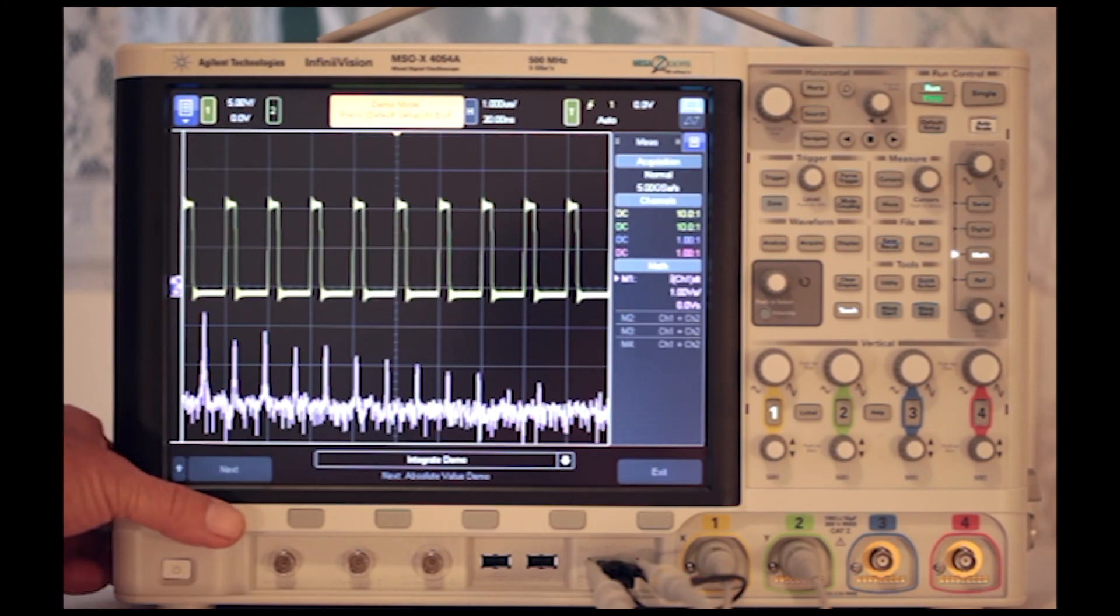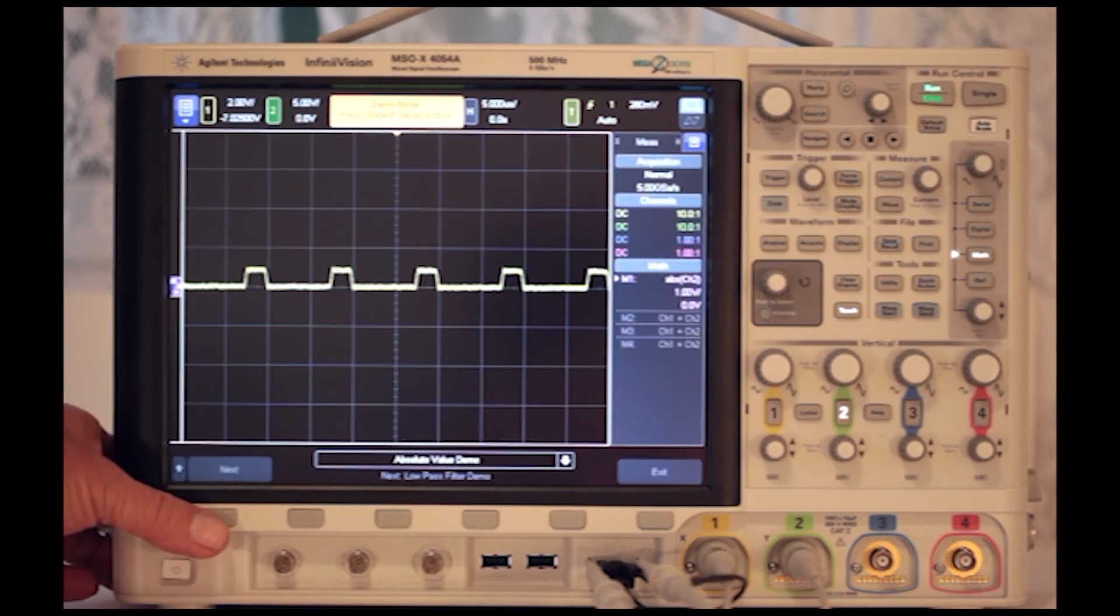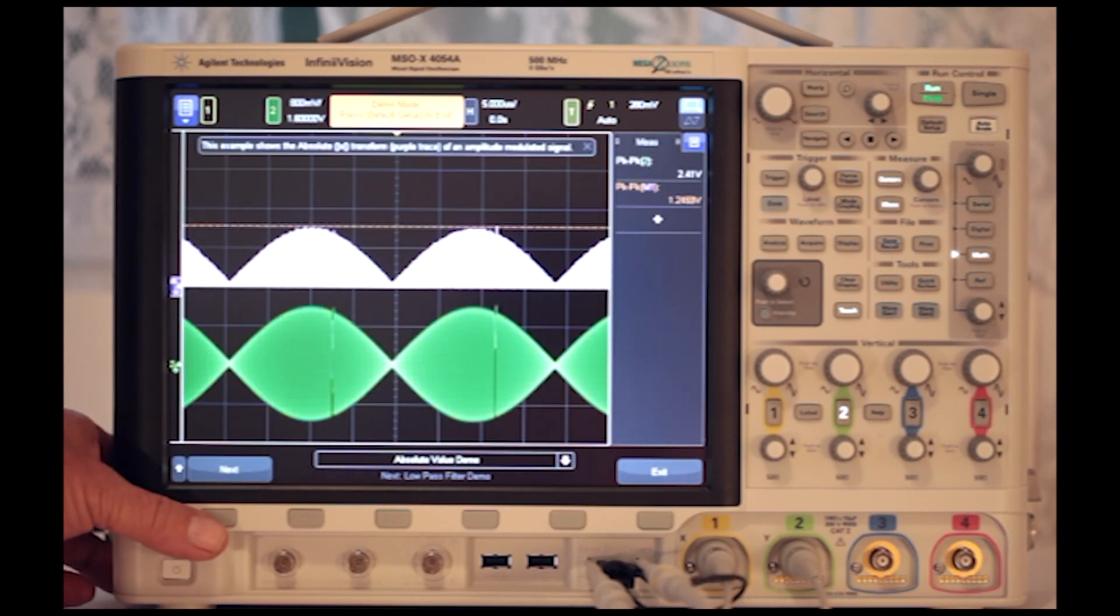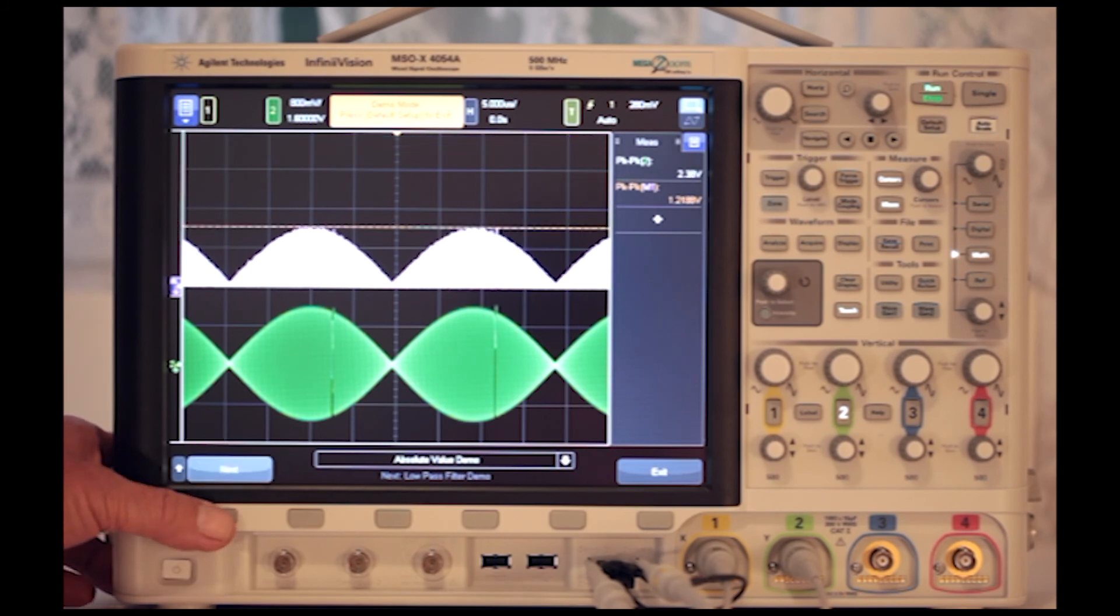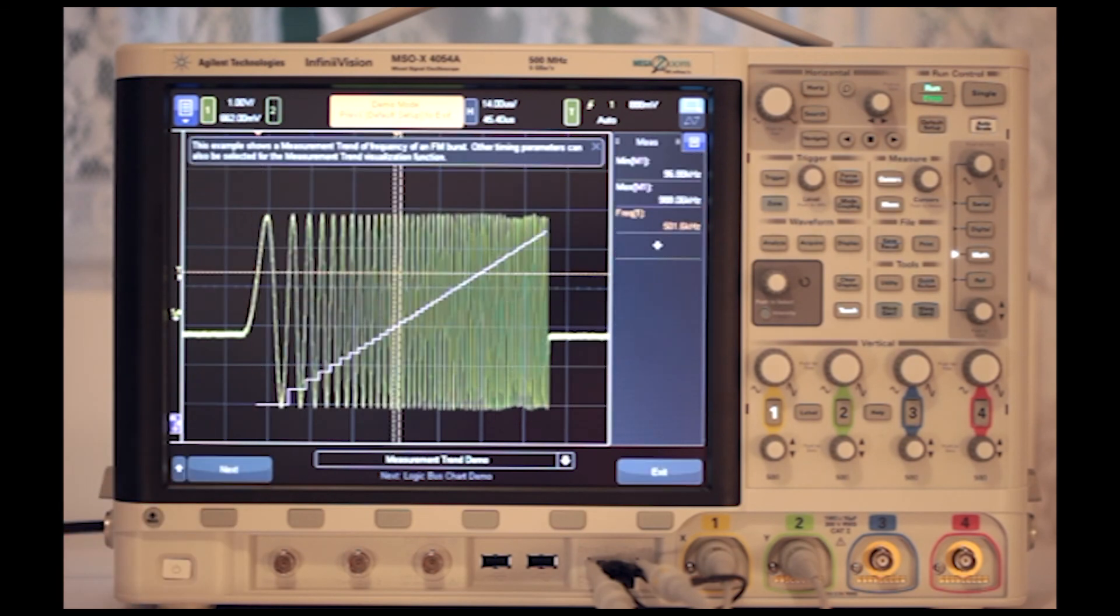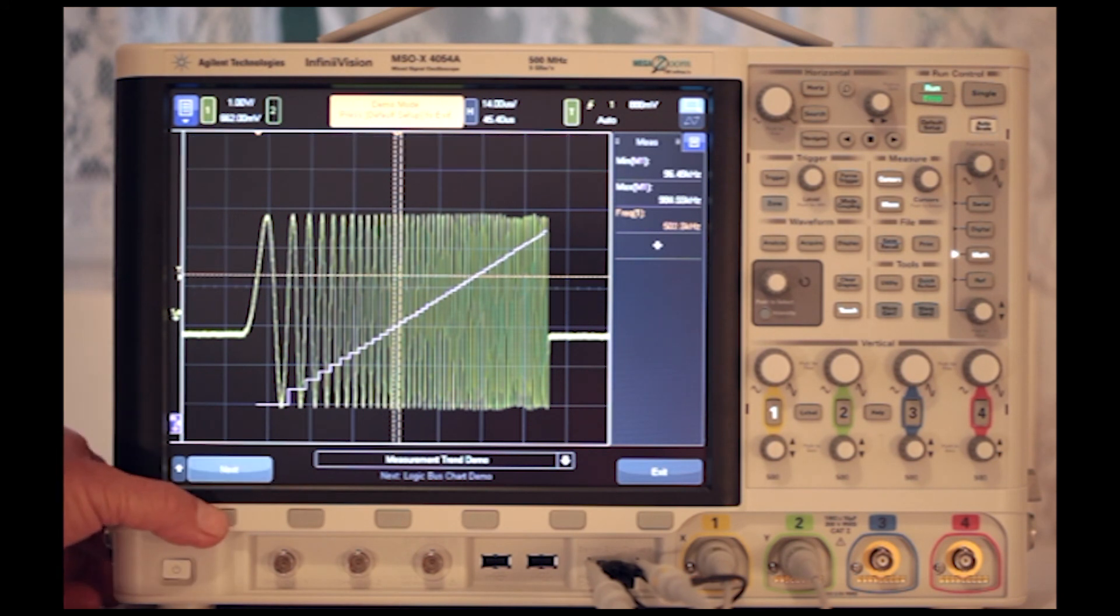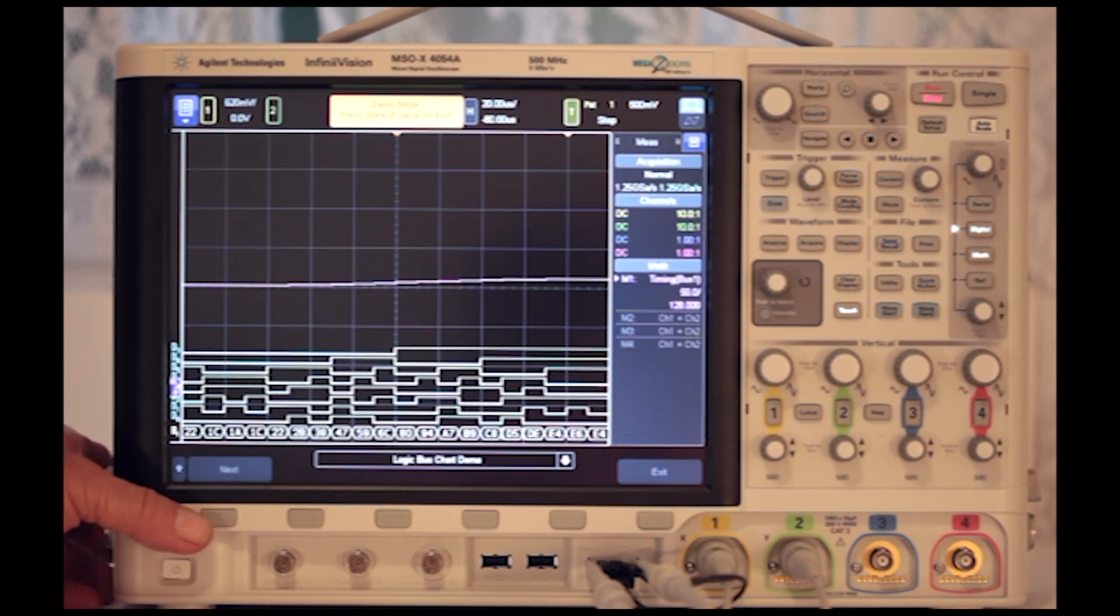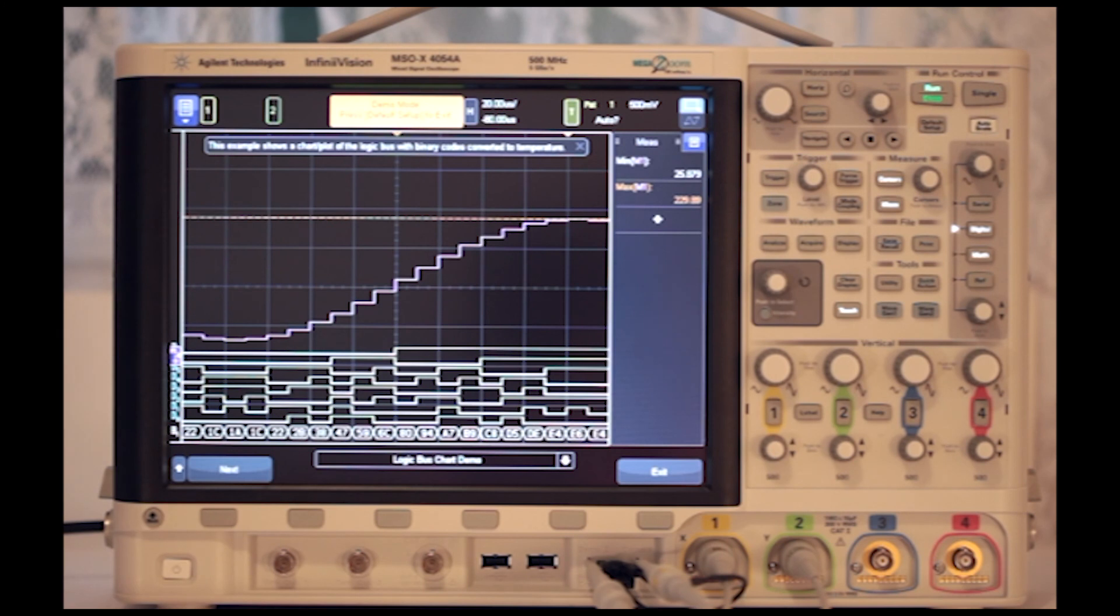Touching the on-screen button labeled next, we see successively an integration transform of a digital pulse stream, an absolute transform of an amplitude modulated signal, a low-pass filter function with a cutoff frequency of 5 MHz applied to a digital pulse with ringing, a measurement trend of frequency of an FM burst, and a chart plot of a logic bus with binary codes converted to temperature.